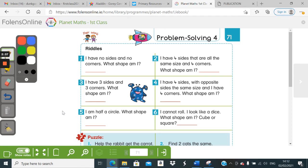Four. I have four sides with opposite sides the same size. I have four corners. What shape am I? Well, this is similar to number two, but not quite the same.